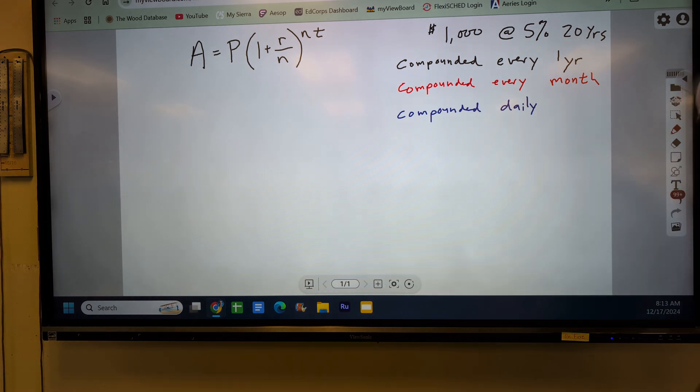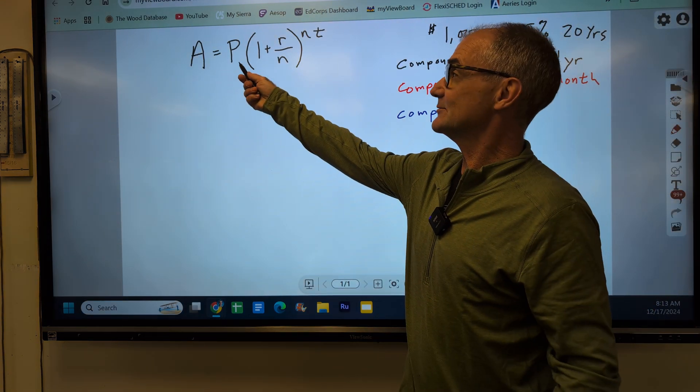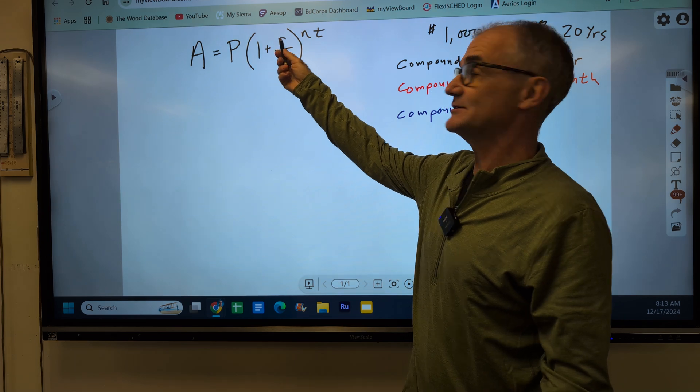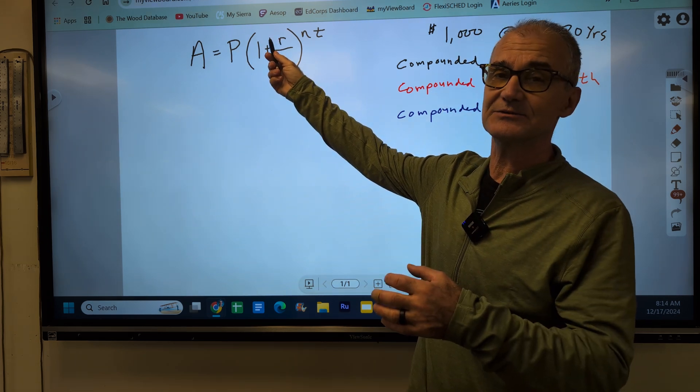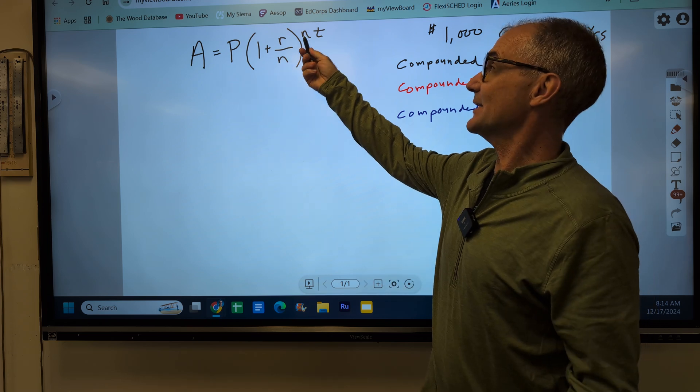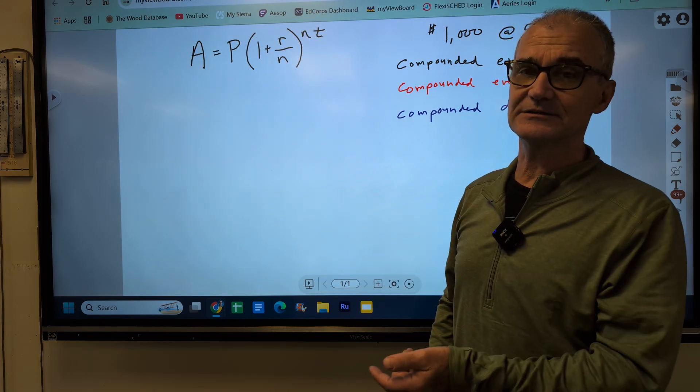So let's go over the equation first. It's the amount is equal to P, the principal of the amount you put in the bank, 1 plus your interest rate as a decimal, divided by the number of periods to the power of the number of periods times t in years.